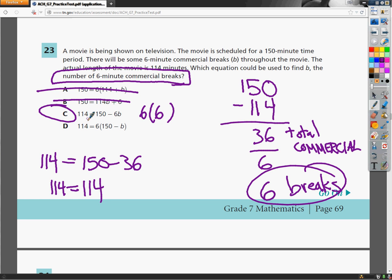Plus, it makes a lot of sense, because I take the total time of the movie, I subtract 6 6-minute breaks, and it will give me what's left over, which should be the movie itself. So I'm basically taking the breaks away, and all I have left is the movie, which makes a lot of sense from an equation standpoint.